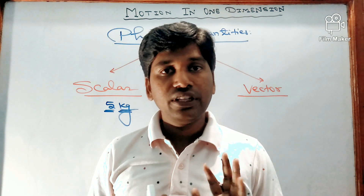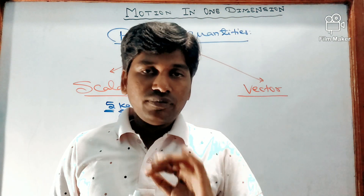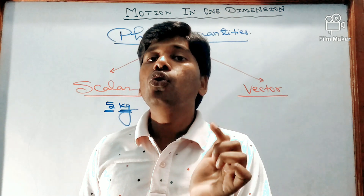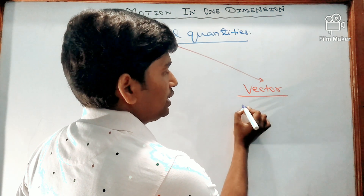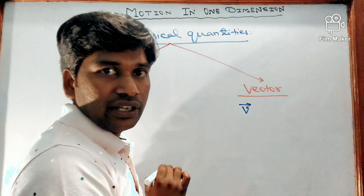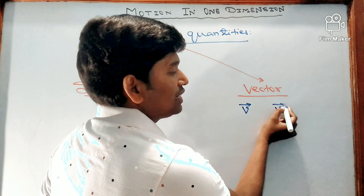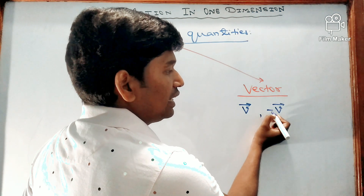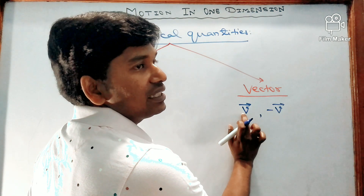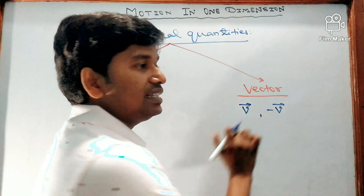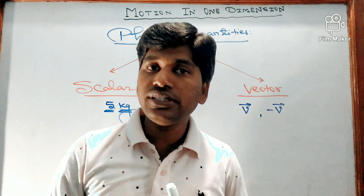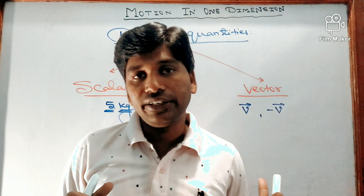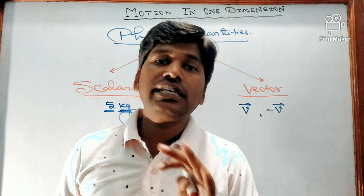Scalar quantities can be added, subtracted, multiplied, or divided using simple algebra or arithmetic methods. But for vectors we cannot do that — we require vector algebra. A vector can be represented by an English letter with an arrow over it, like velocity written as v with an arrow. A negative sign indicates the direction is reversed — it is the opposite of the original vector.